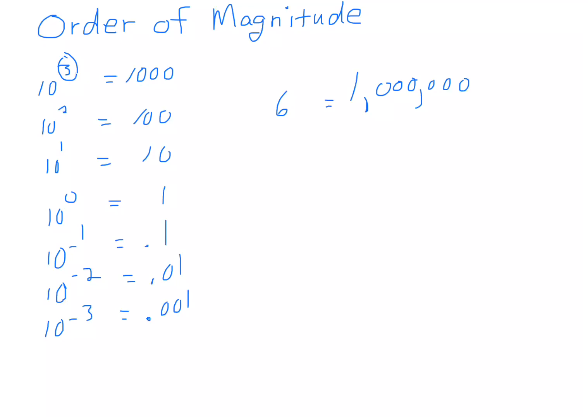So an easy way to figure out the order of magnitude is to take any number. So if I say we have the number 3,428, and I want to know what the order of magnitude of that number is, the easiest way to do it is to put it in the scientific notation.